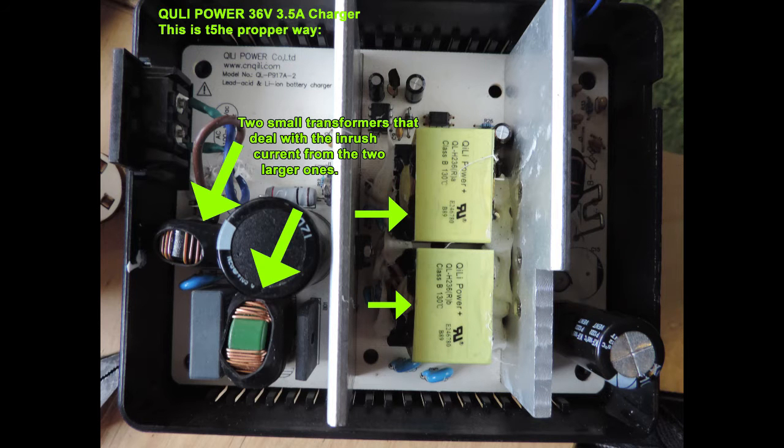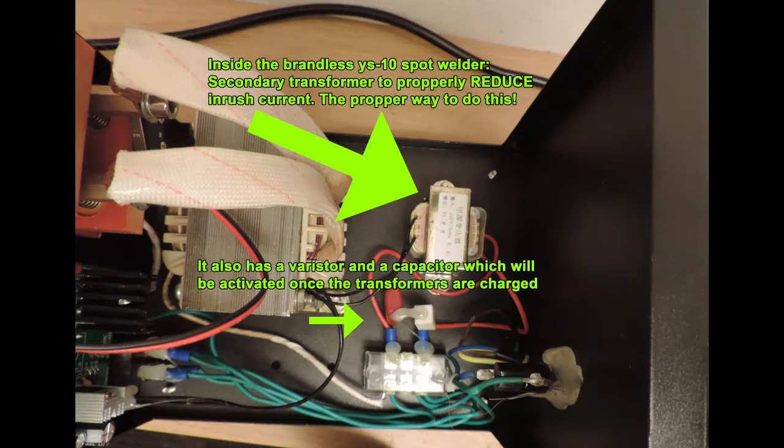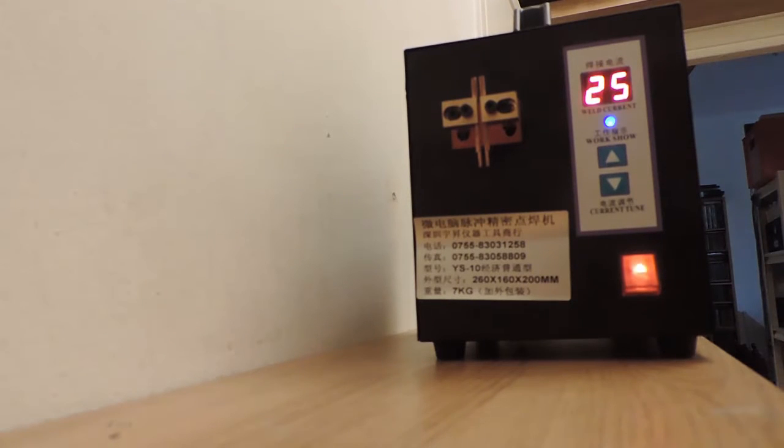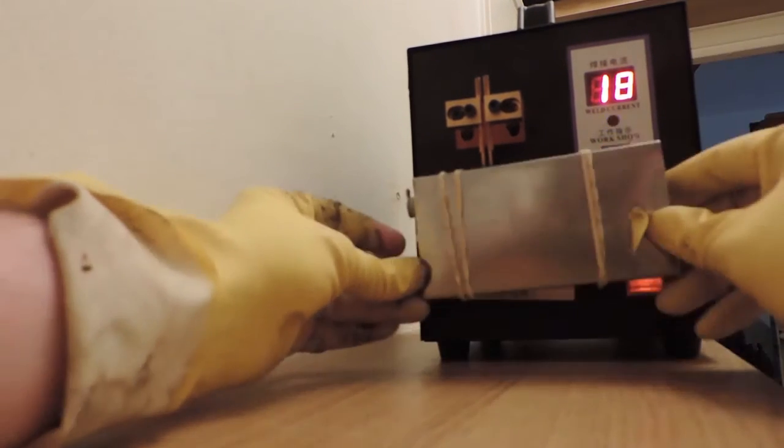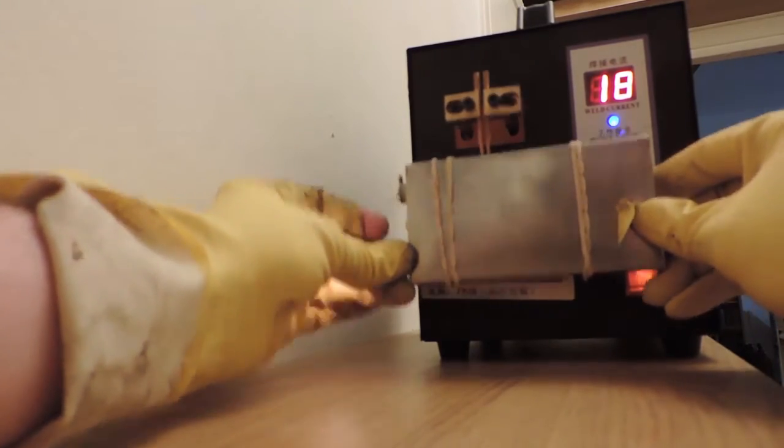In cheap power supplies and chargers, one can get away with NTC and varistors and such, but when dealing with large transformers there must be a smaller transformer to reduce the inrush current. The other nameless spot welder I bought on Aliexpress has this secondary transformer and it works fine.